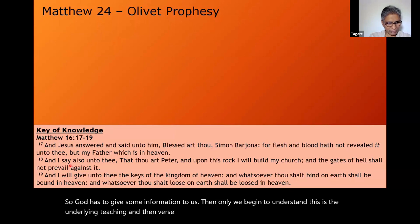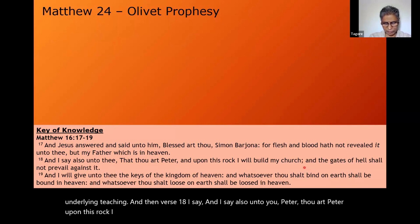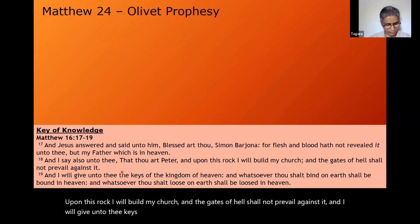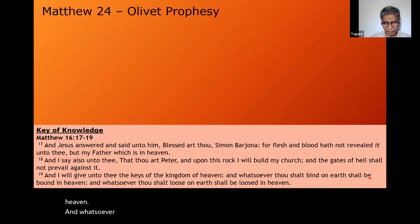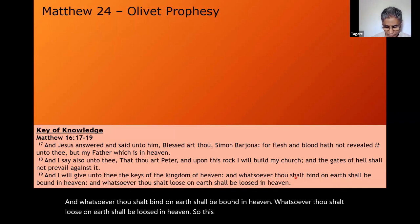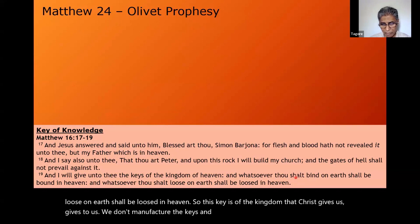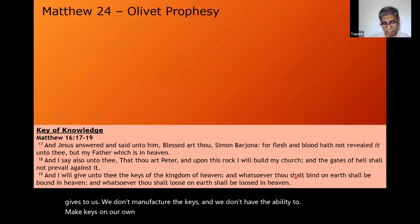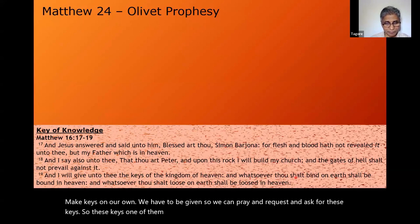'And I will give unto thee keys — multiple keys — of the kingdom of heaven. Whatsoever thou shall bind on earth shall be bound in heaven, and whatsoever thou shall loose on earth shall be loosed in heaven.' These keys of the kingdom that Christ gives us — we don't manufacture the keys, we don't have the ability to make keys on our own. We have to be given them, so we can pray and request and ask for these keys. One of them is the key of knowledge.